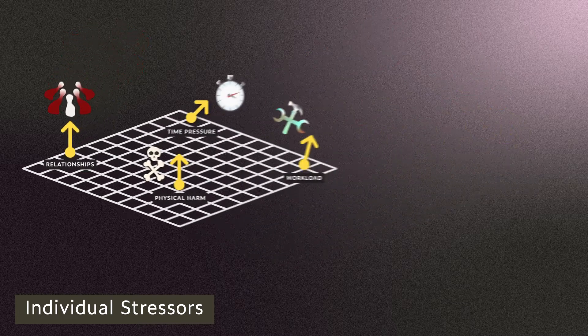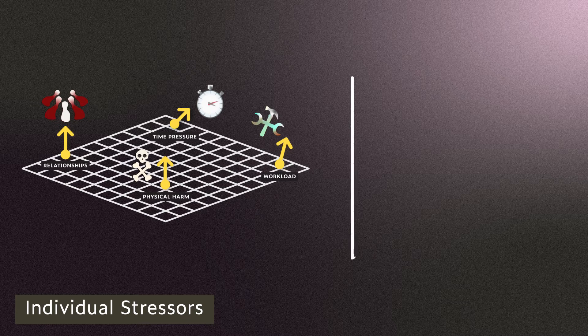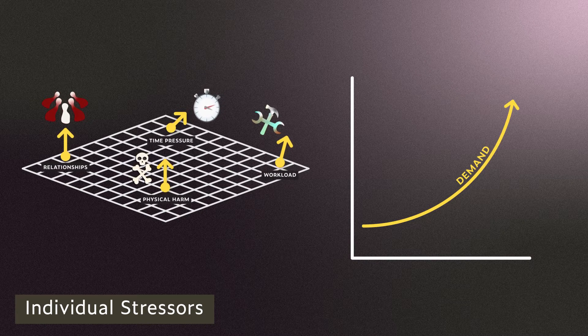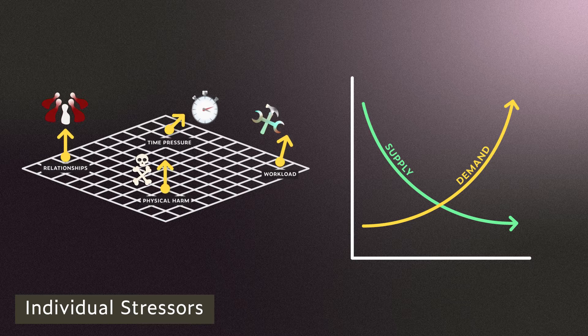Generally though, changes in performance are related to two types of individual stressors. The demands of the task, the depletion of available resources, or both.